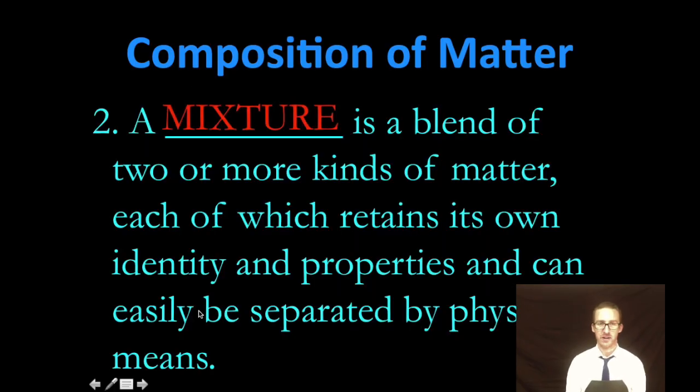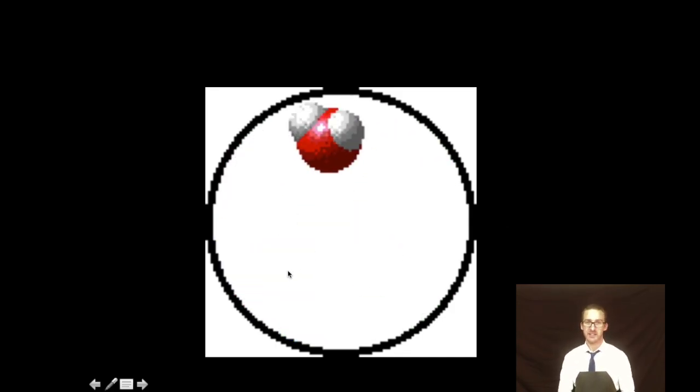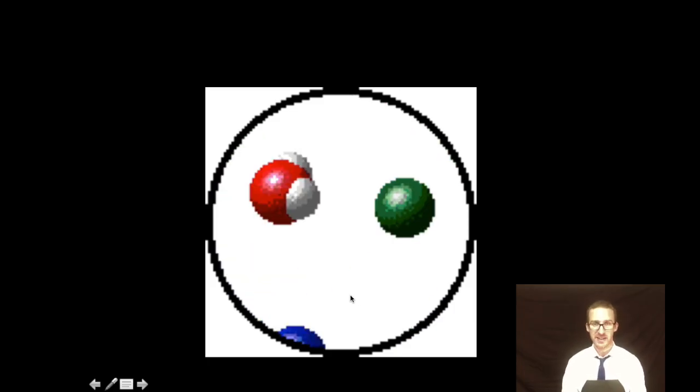Okay, our next big classification of matter is of mixtures. And here we have a blend of two or more kinds of matter. But each of those kinds of matter retain its own identity and properties and can easily be separated by physical means. So as you take a look at the molecular level of an example of a mixture, notice in this mixture, I've got an example of a couple of different elements and a compound. The green particle would represent an element because it's just one type of atom, as would the blue diatomic element because it's just one type of atom. However, this mixture also contains a compound, which is that red and white one, because it's two types of atoms chemically bonded together.